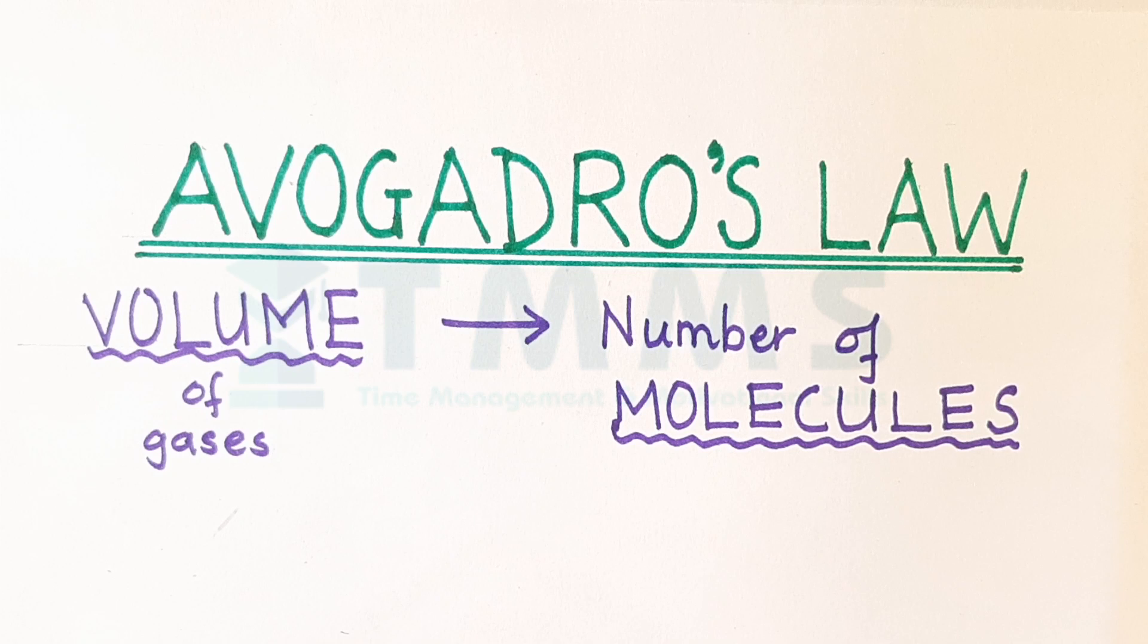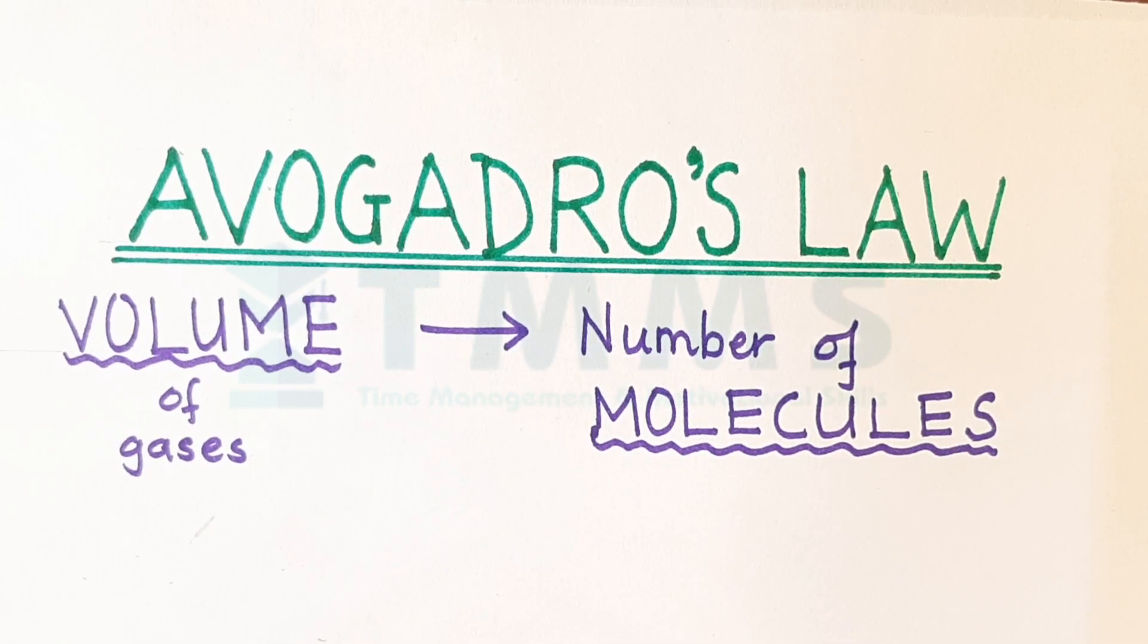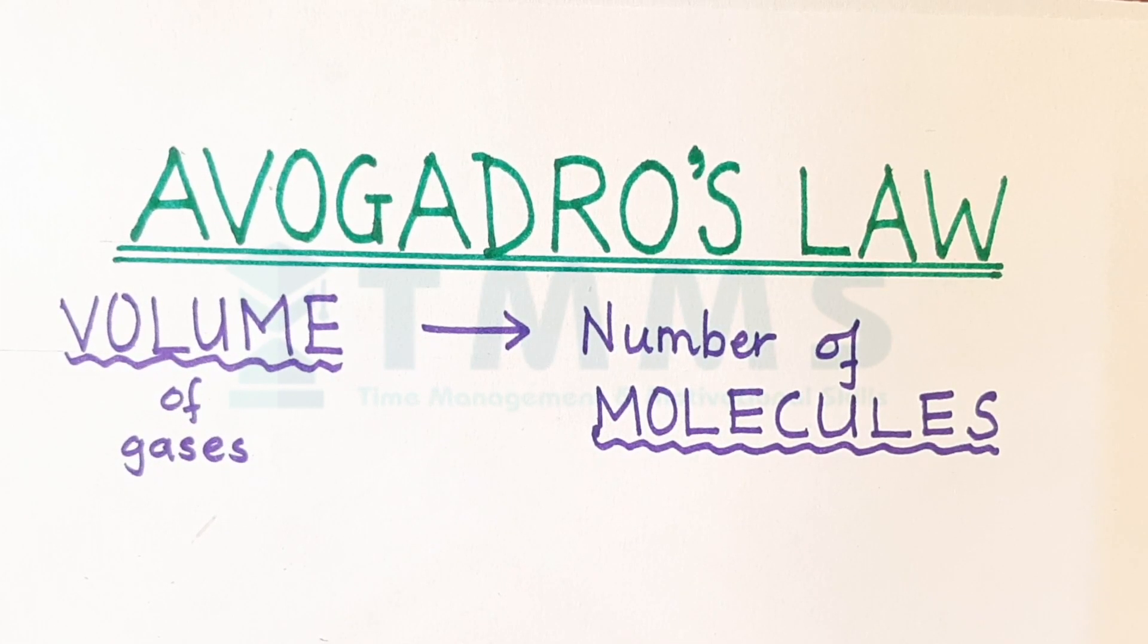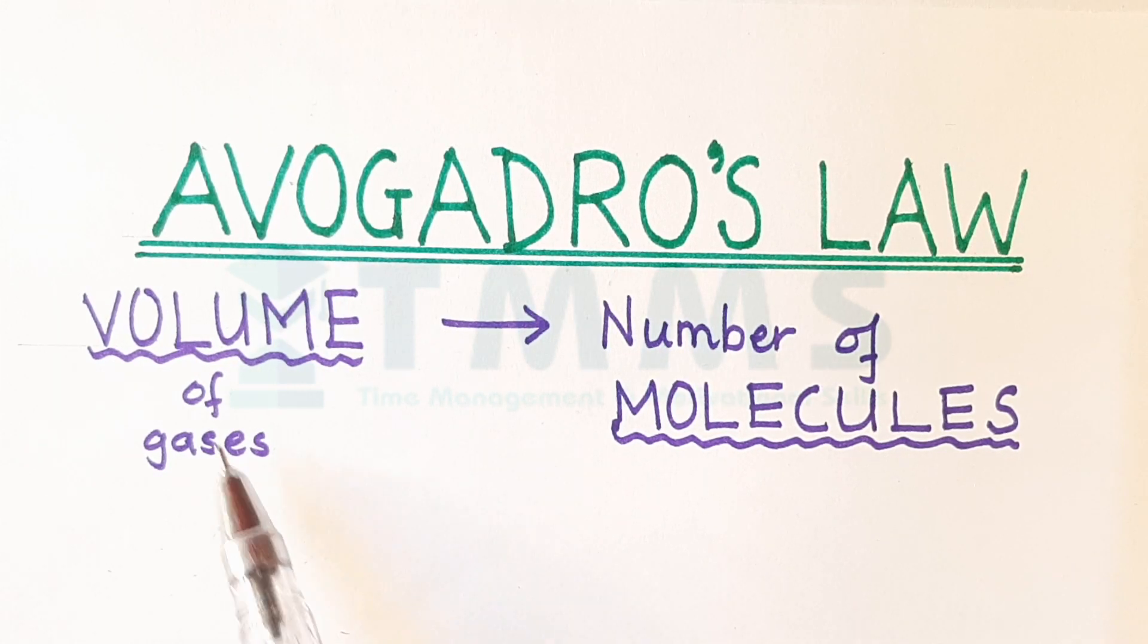Avogadro's law. In chemistry of senior school, we have Boyle's law which connects volume of a gas with pressure. Charles law connects volume of a gas with temperature. And Avogadro's law connects the volumes of a gas with the number of molecules.